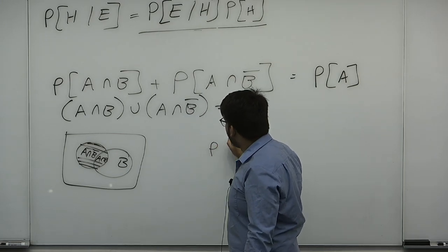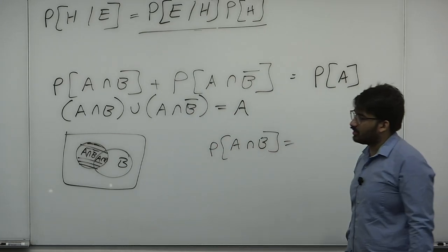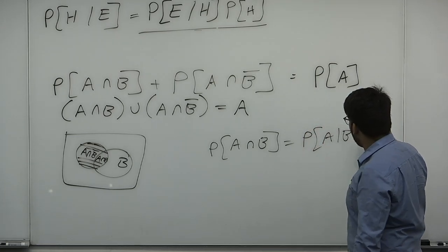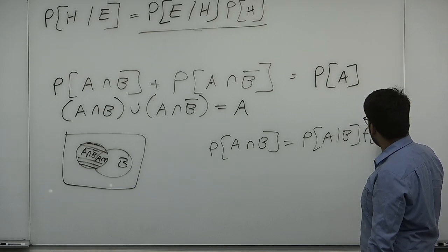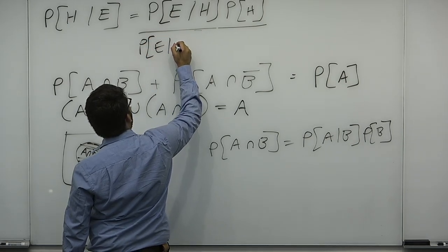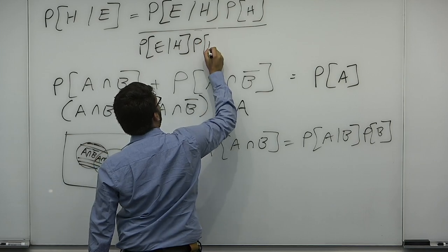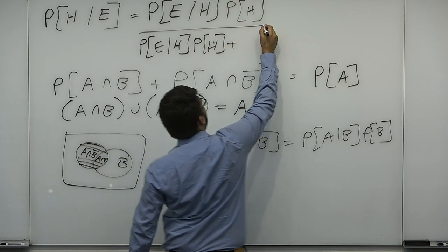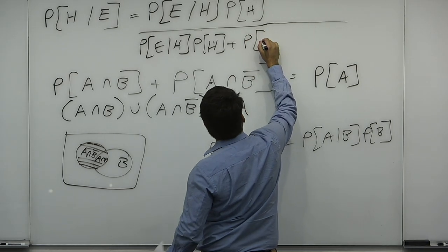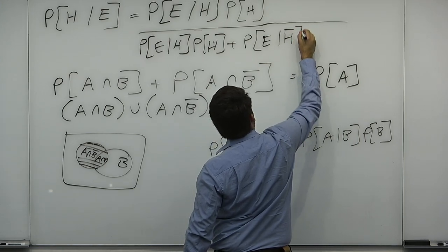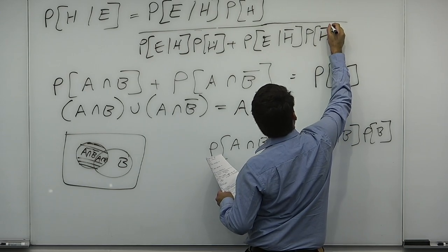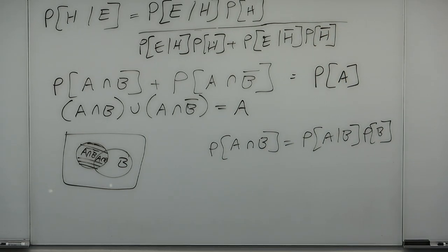The probability of A intersect B in terms of conditional probabilities is the probability of A given B times the probability of B. So instead of the denominator P(E), you usually write: the probability of E given the hypothesis, weighted by the probability of the hypothesis occurring, plus the probability of the evidence given that the hypothesis did not occur, times the probability that the hypothesis did not occur.